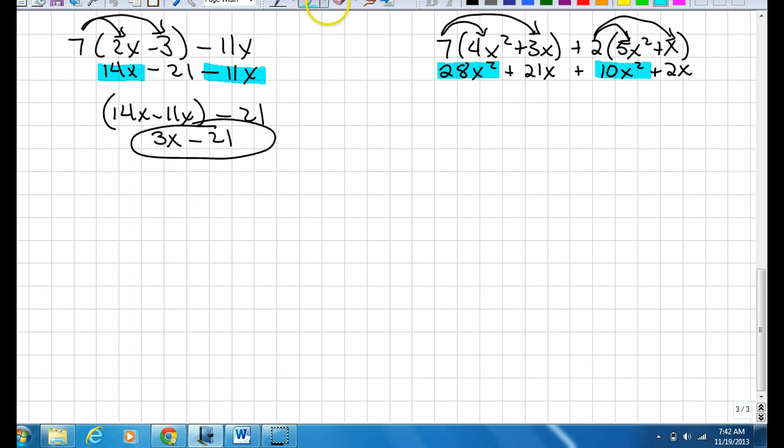I can put those two together, and I can put these two together. They're like terms. So 28x plus 10x is 38x squared, and 21x plus 2x is 23x. And this is my final answer for that.